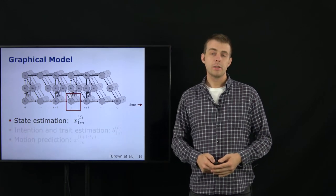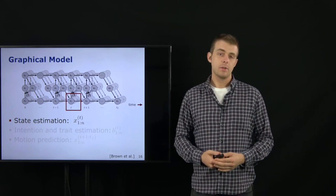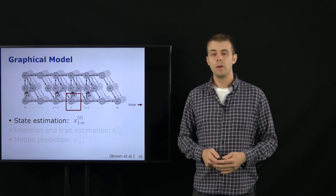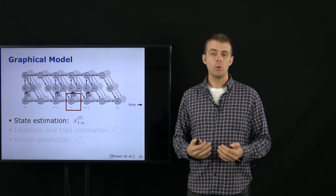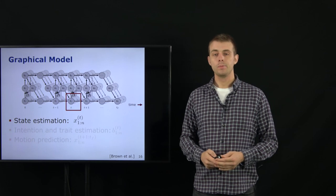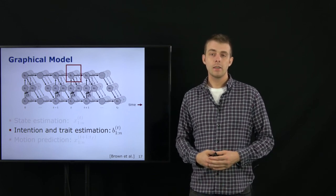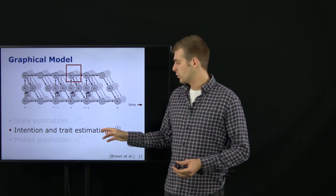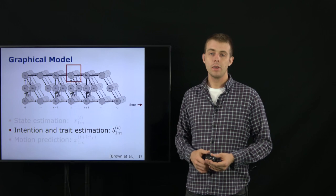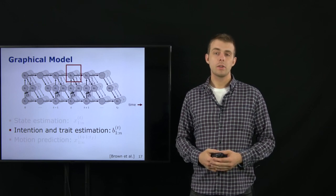What are possible estimation tasks on this graph? One is state estimation, where we infer the states of all agents at a specific time step. If we do this for all past states we get the full past trajectory — this could be localization of our own ego state, or if estimating the states of others, detection and tracking. Another task is intention and trait estimation: if we are interested in the internal states of an agent at time t, this is modeled by the internal state.